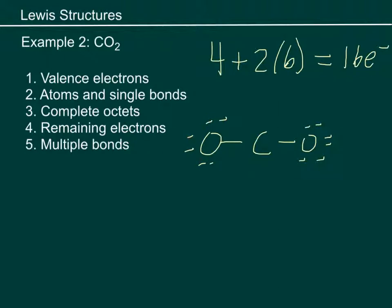Counting: 2, 4, 6, 8, 10, 12, 14, 16 electrons. We're supposed to have 16 electrons, and we have 16 electrons. But where do we stand? We can't add any more, but that's a problem because each oxygen has eight electrons, but this carbon only has four electrons. So what we're actually going to need to do is take some electrons and put them into a double bond.